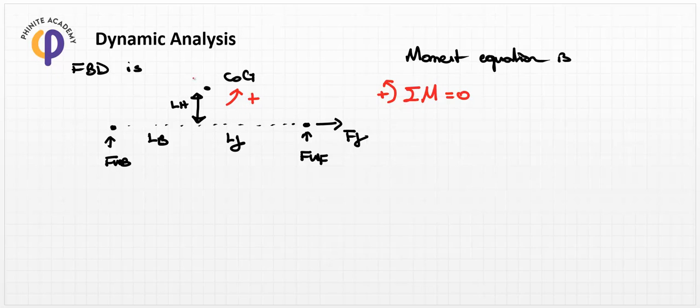This positive moment can be created by ff times lh because it's positive. The ff is here and the lh is here, so this turns like this.